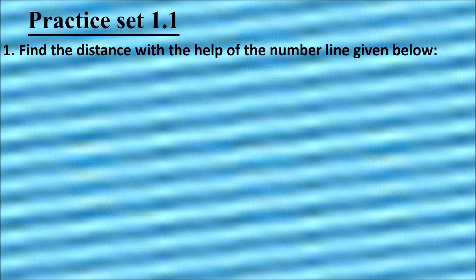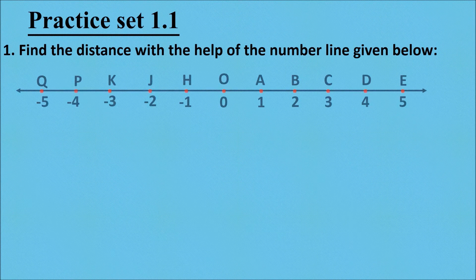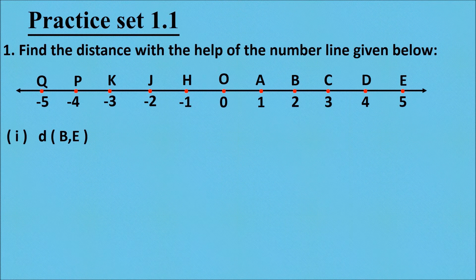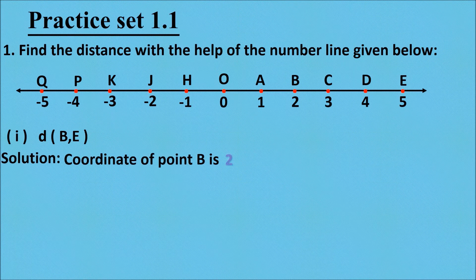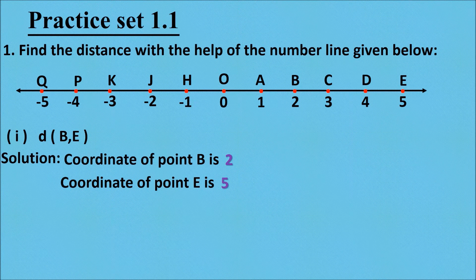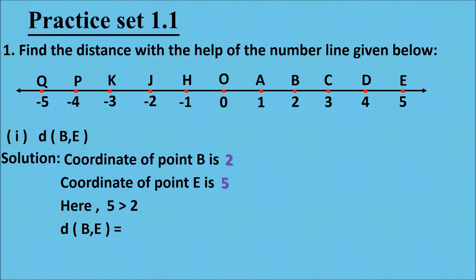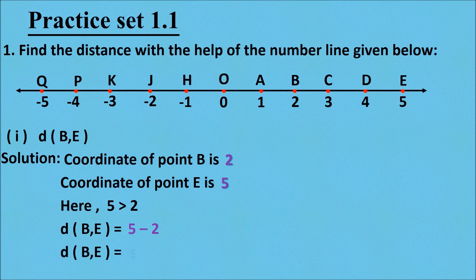Now we will see Practice Set 1.1. The first question is: find the distance using the number line given below. Find the distance between point B and E. Looking at the number line, the coordinate of point B is 2 and the coordinate of point E is 5. Since 5 is greater than 2, distance BE equals greater coordinate minus smaller coordinate, that is 5 minus 2. Therefore, distance BE equals 3.